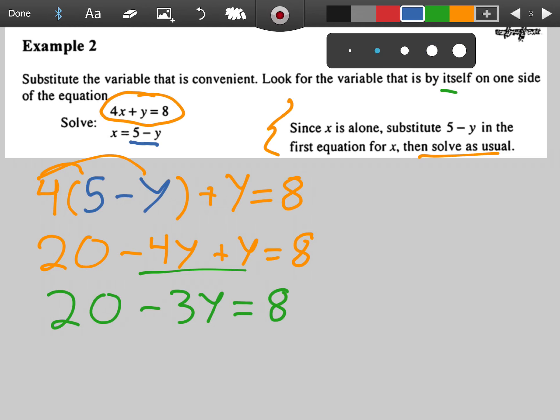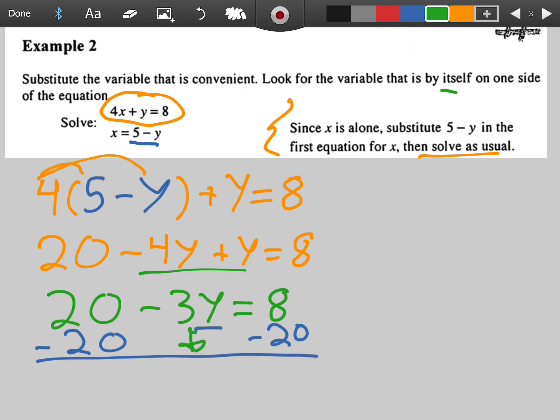Continue to isolate your variable. So we can move 20 to the other side. And then on the left, we're still left with negative 3y. So just drop that like it's hot. 8 minus 20. What does that get us? Hopefully you're saying negative 12. We can then divide both sides by negative 3. We can take this further and say that y equals positive 4.